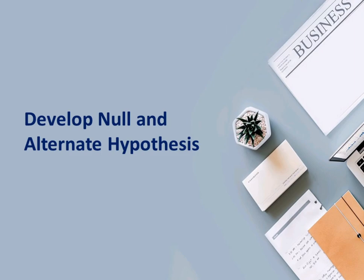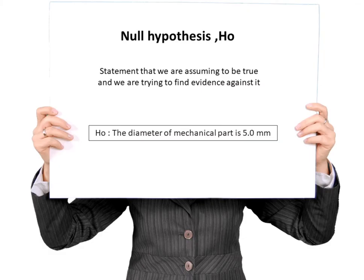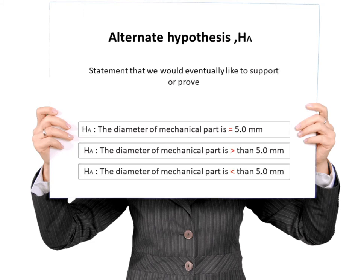Develop null and alternate hypothesis. Null hypothesis or H sub 0 is the statement that we are assuming to be true and we are trying to find evidence against it. Alternate hypothesis is the statement that we would eventually like to support or prove.